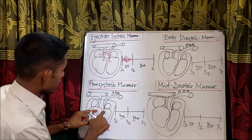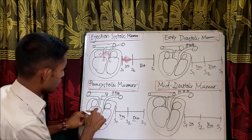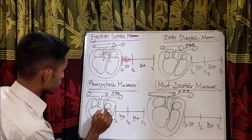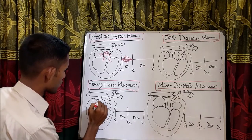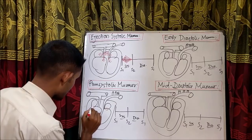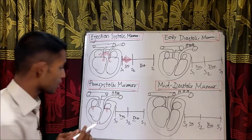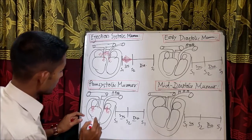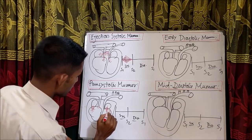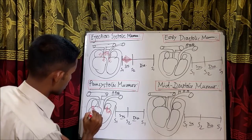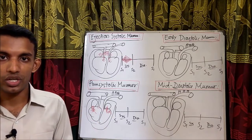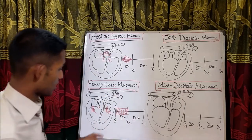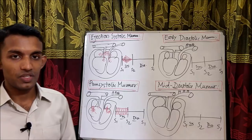The aortic valve and pulmonary valve I will not consider here. These two valves — mitral and tricuspid — are supposed to be closed during systole. But if there is leakage during systole, then we will get murmur in the whole systole. That is called pansystolic murmur. That's why in mitral regurgitation and tricuspid regurgitation, I will get pansystolic murmur — in the whole systole.